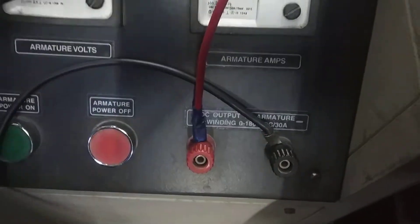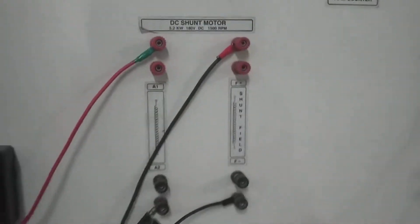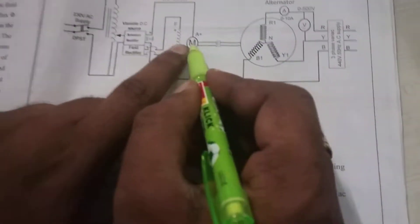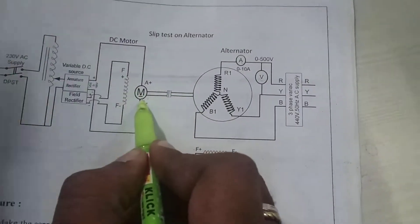The field winding output is taken separately across here. The armature winding output is taken from here and directly connected there. The coupling between the alternator and the motor is done internally.